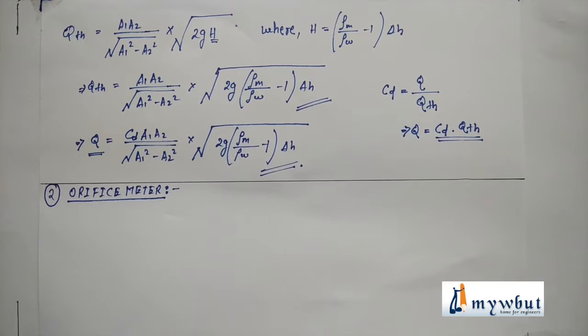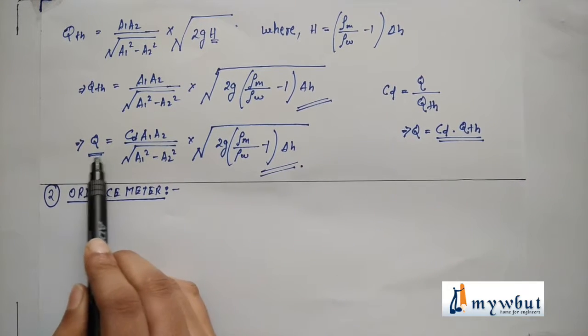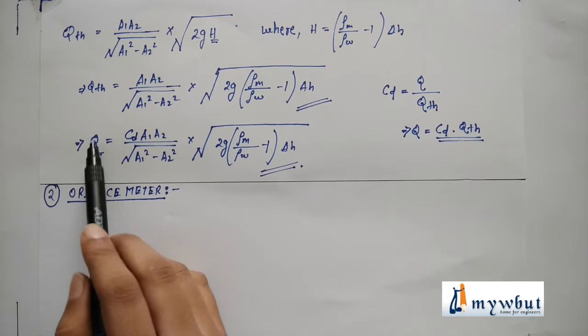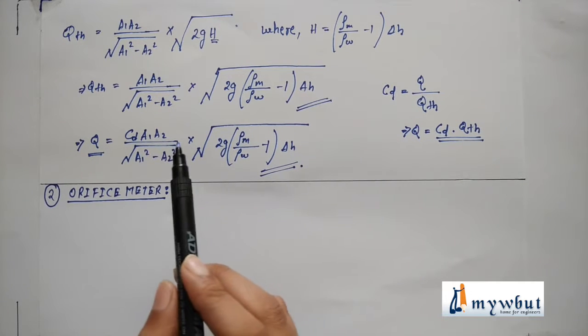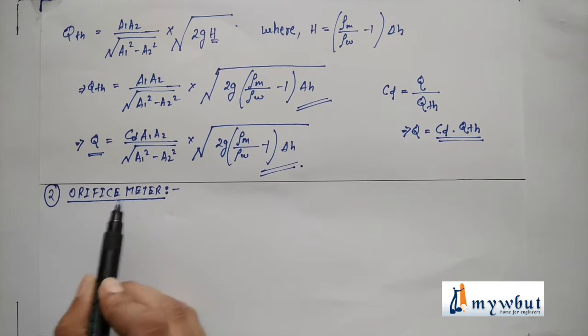So in the previous video we have learned about the derivation of the volumetric flow rate, that is the actual volumetric flow rate of the venturimeter. Now in this one we will learn about two other applications of Bernoulli's theorem.